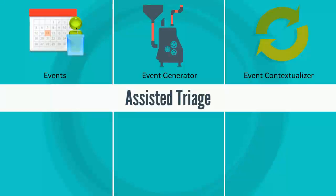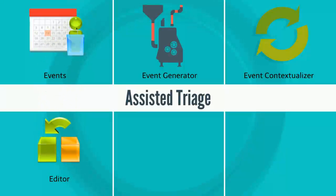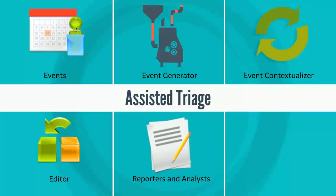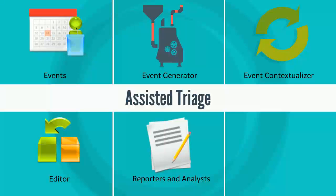The contextualizer passes this context information to the editor. The editor tracks different contexts and assigns one reporter per specific event context for further analysis. Reporters know the different types of analysts that are available in the system and run the context through each analyst. Analysts analyze the context for event types, patterns, and potential impact, and then each analyst creates a statement.